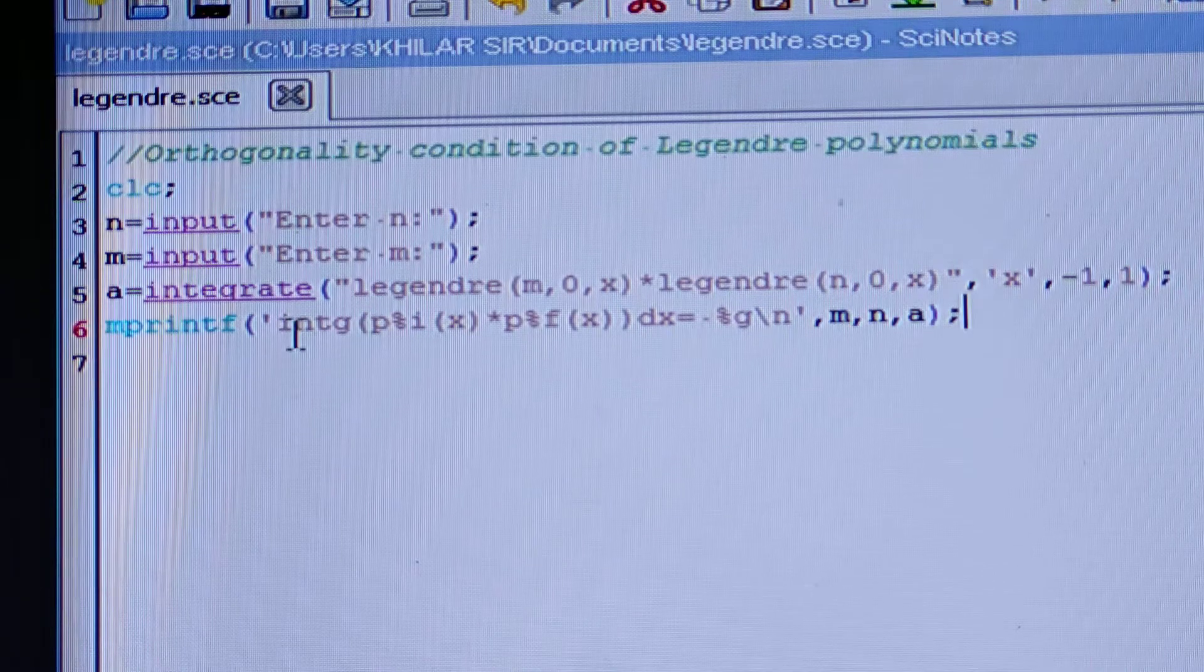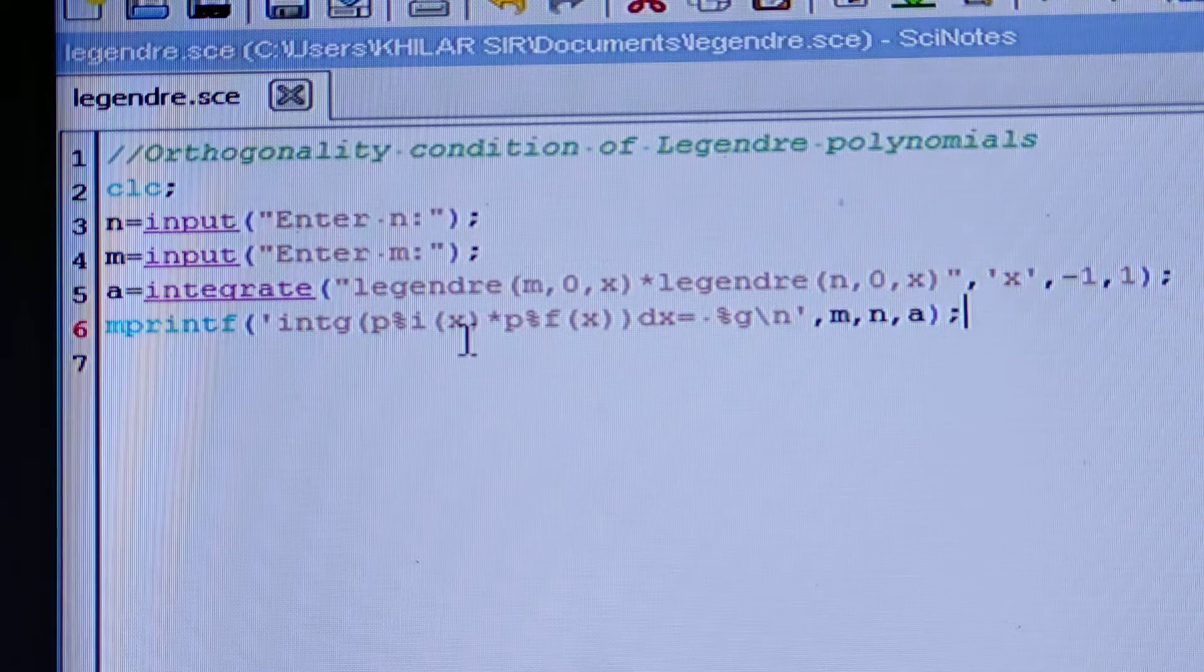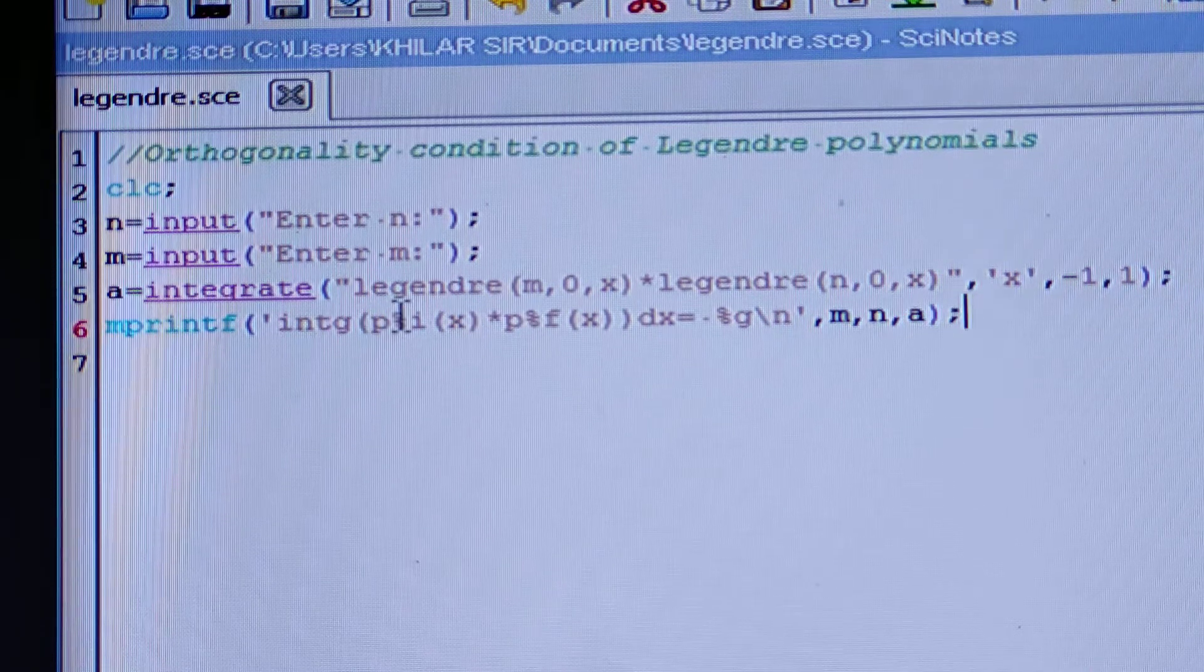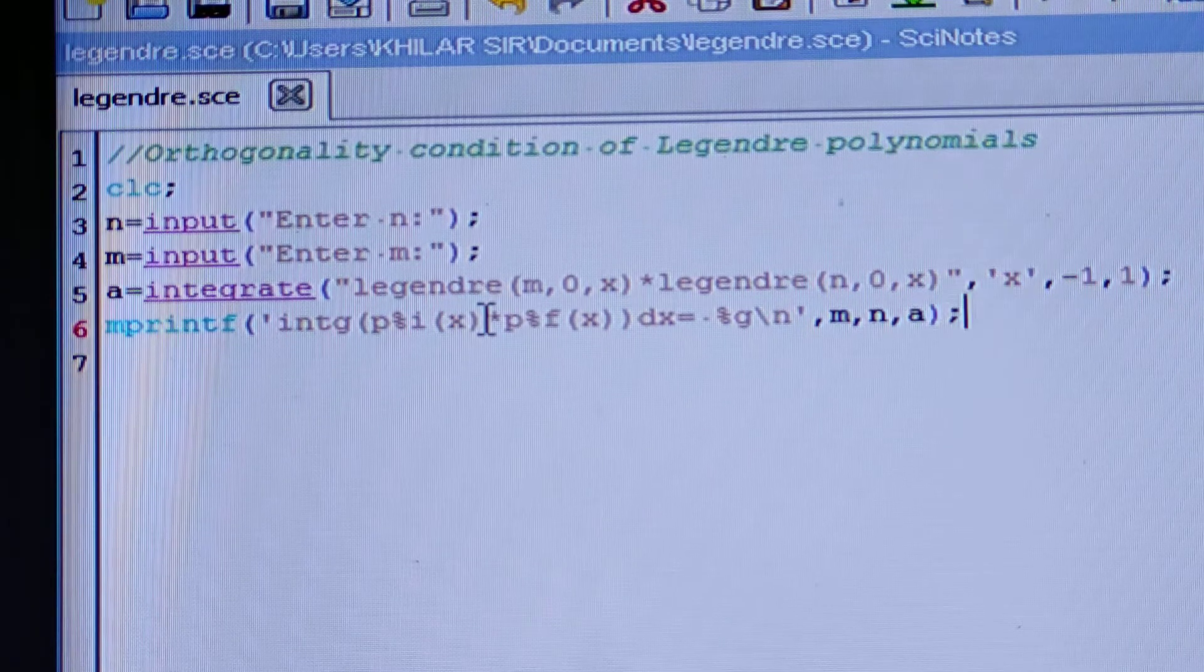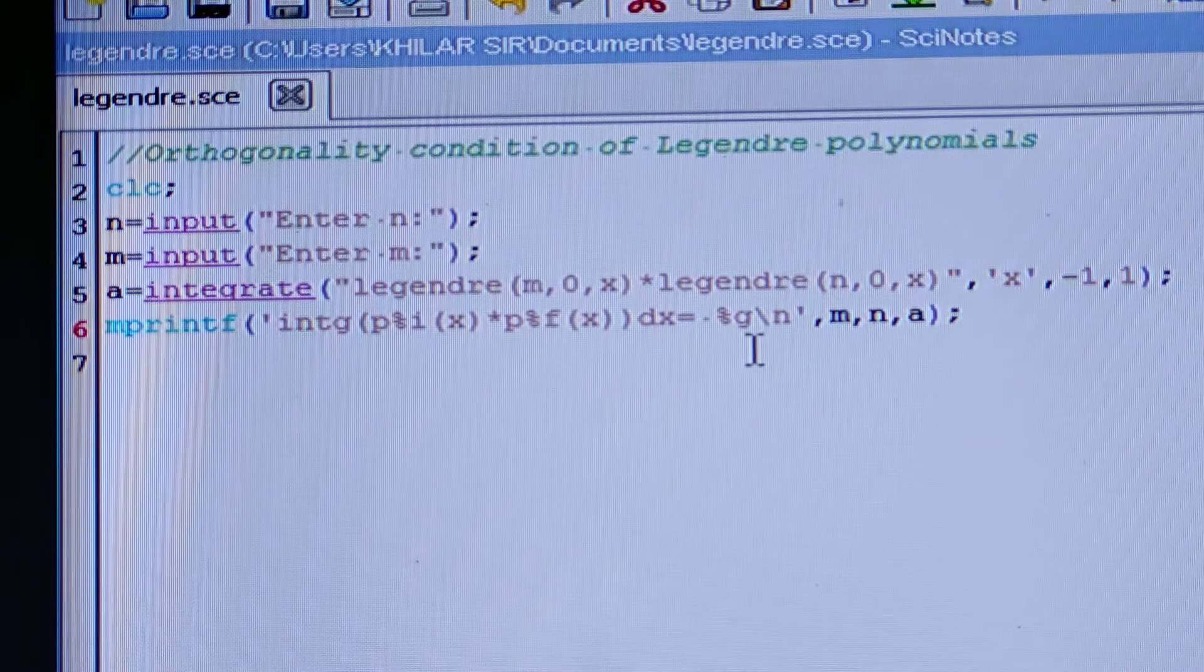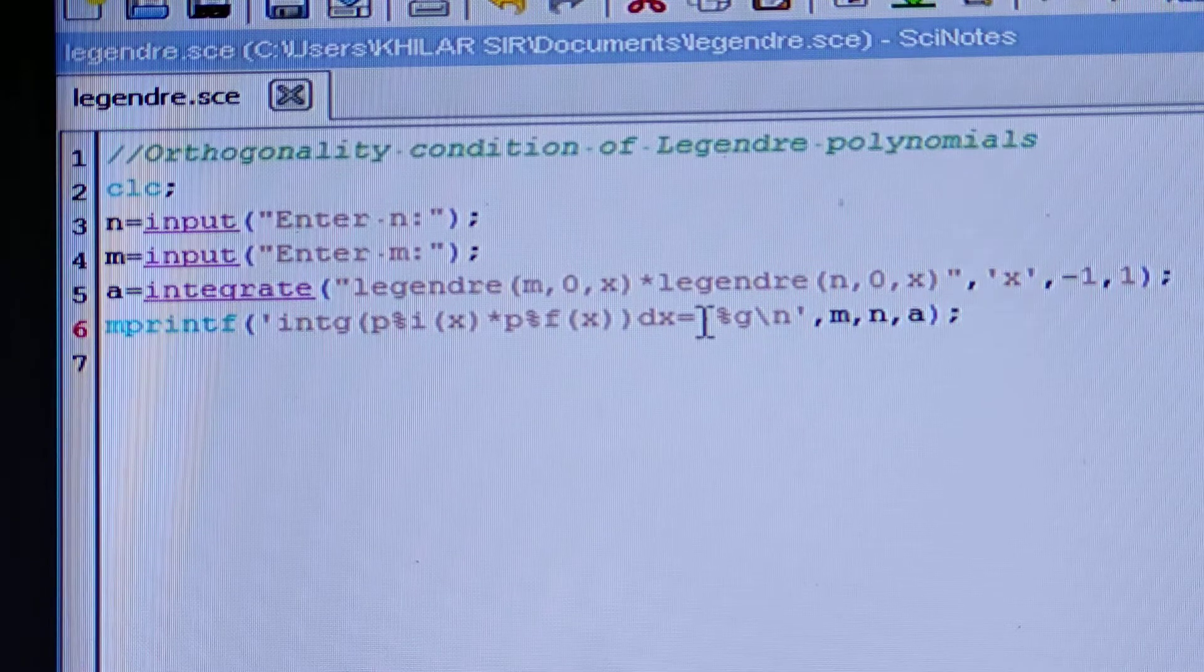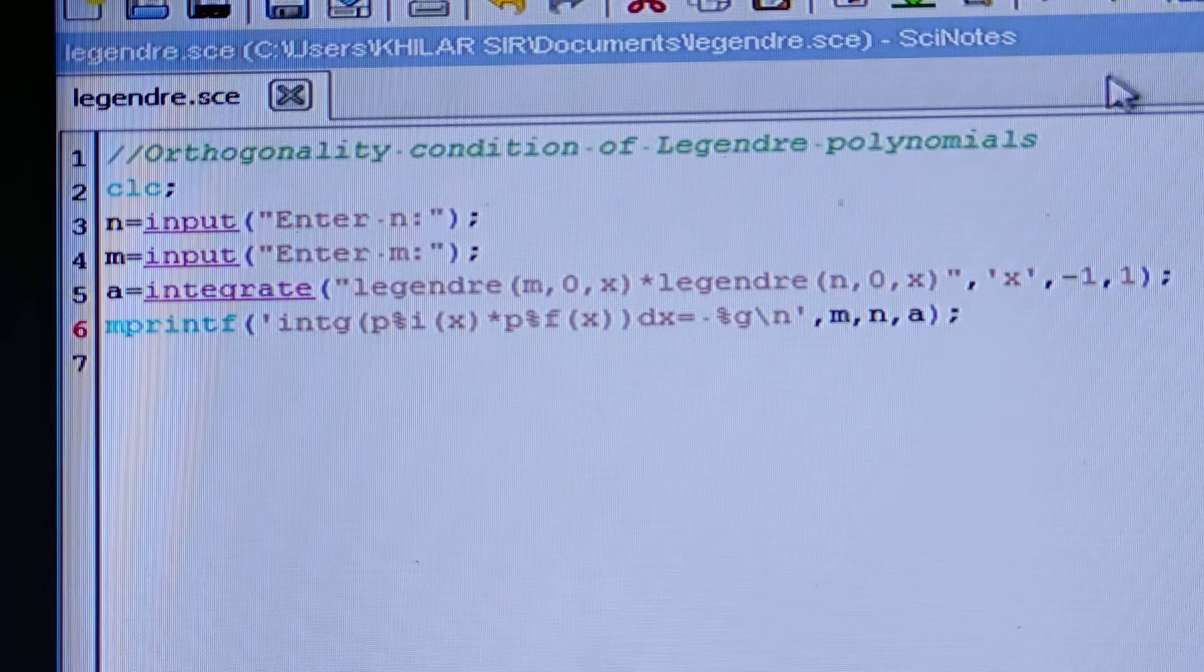Now mprintf - that is integration INTG (that is the short form of integration), and here P (that means Legendre polynomial) of I of X (any one function) multiplied by P of F of X raised to X is equal to this one. Now we should write this notation in this way. Now let us execute this one.